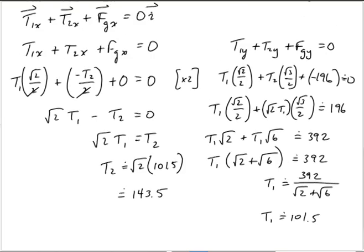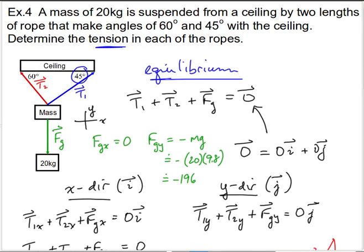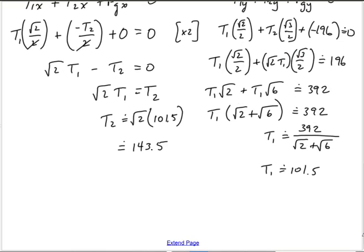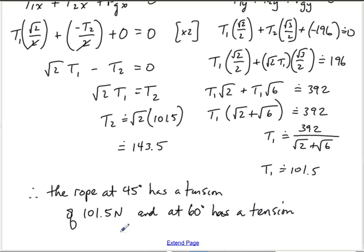We need to keep track of which tension is which: T1 is the rope to the right at 45 degrees, with a tension of approximately 101.5 newtons. T2 is the rope to the left at 60 degrees, with a tension of approximately 143.5 newtons. Congratulations — you've reached the end of this supplementary video.